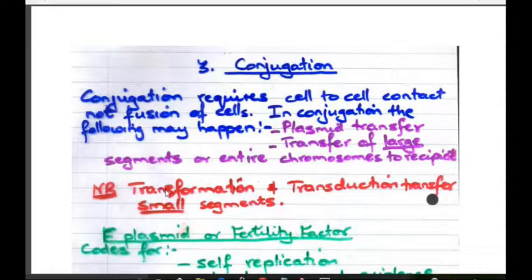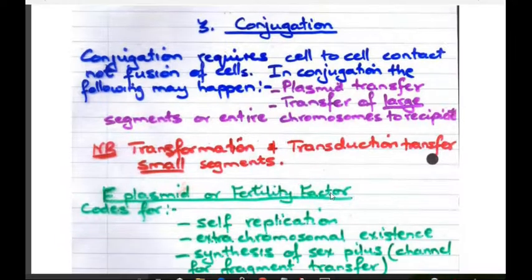Note the following. Transformation, which is the first one we did, and transduction, which is the second one we did, will transfer small segments of DNA. Transduction, because we're dealing with a virus, which is much smaller than a bacterium. Transformation, also because we are dealing with a broken up chromosomal DNA, and therefore we're again dealing with small fragments.